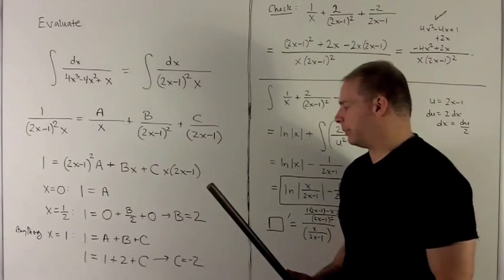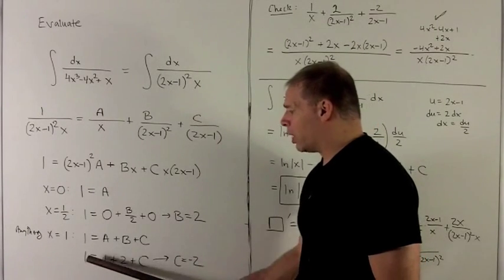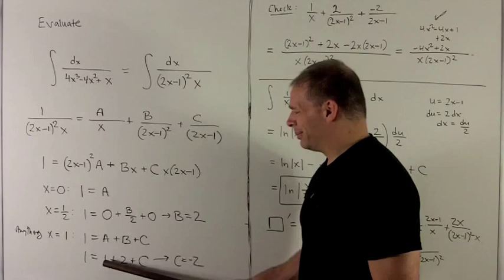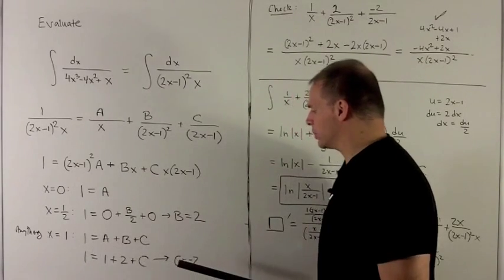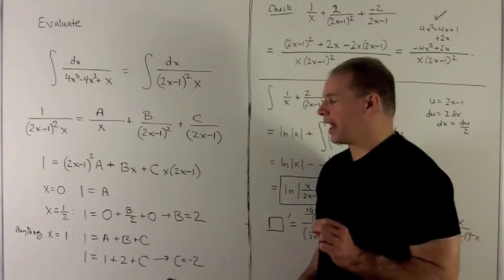Now note we've already solved for a and b. a is 1, b is 2. So I have 1 equals 1 plus 2 plus c. Moving the 3 here to the other side gives me c equal to minus 2. So I found all my constants.